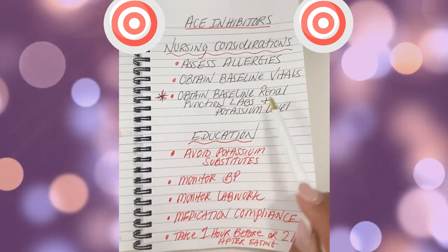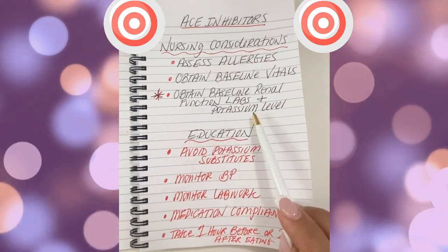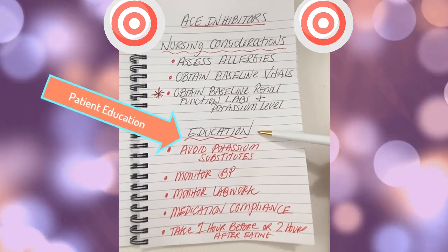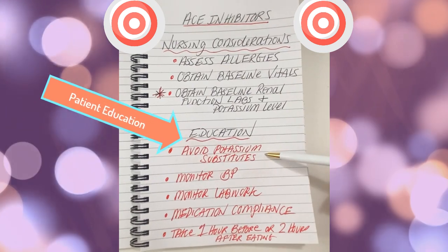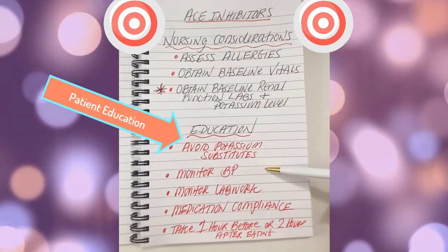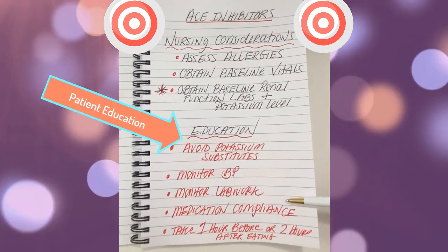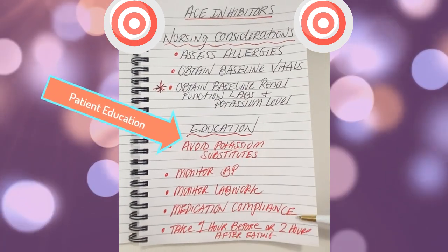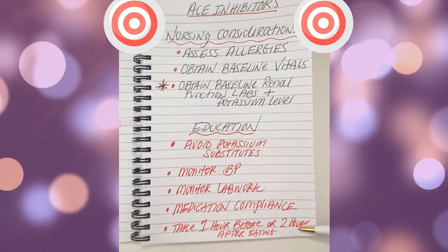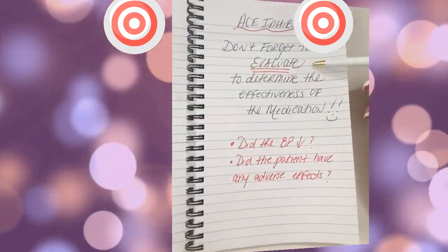Remember, ACE inhibitors may cause renal failure and also retain potassium, so if your patient's potassium is high, you shouldn't give it. Educate your patient on avoiding potassium substitutes, monitor their blood pressure, monitor their lab work at home, and it's very important that they follow medication compliance. ACE inhibitors are to be given one hour before or two hours after a meal.